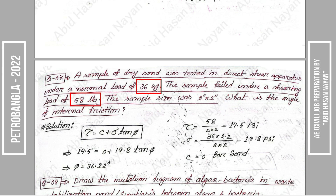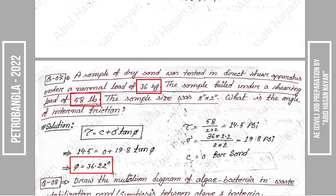For dry sand, cohesion C is equal to 0. So the shear stress equation becomes: tau = C + sigma × tan(φ), which simplifies to tau = sigma × tan(φ). Therefore, tan(φ) = tau/sigma. The angle of internal friction φ is approximately 20 degrees, taken from the calculation of the ratio of shear stress to normal stress.